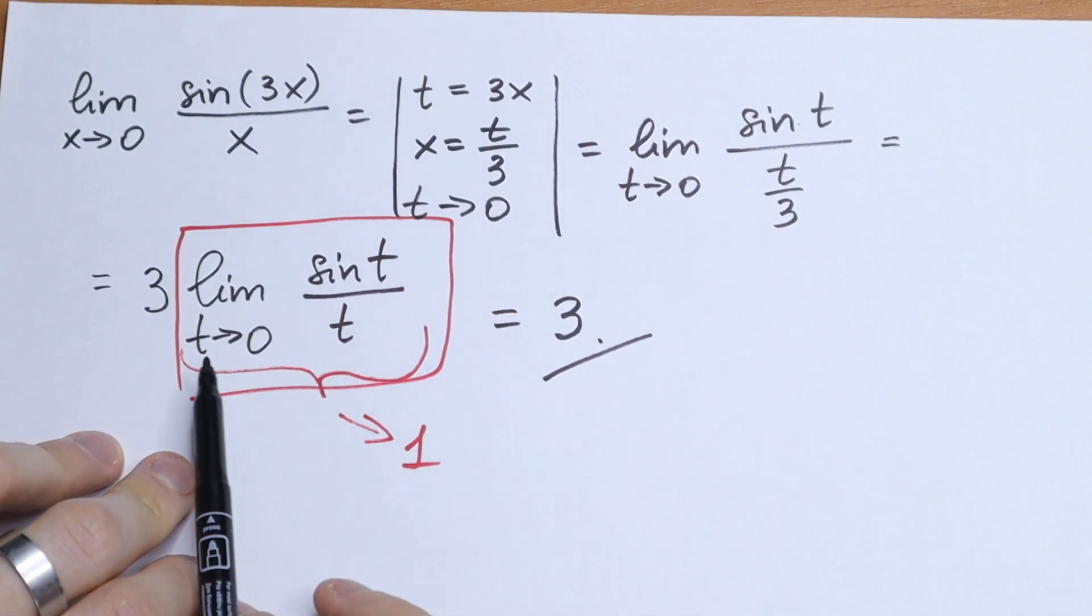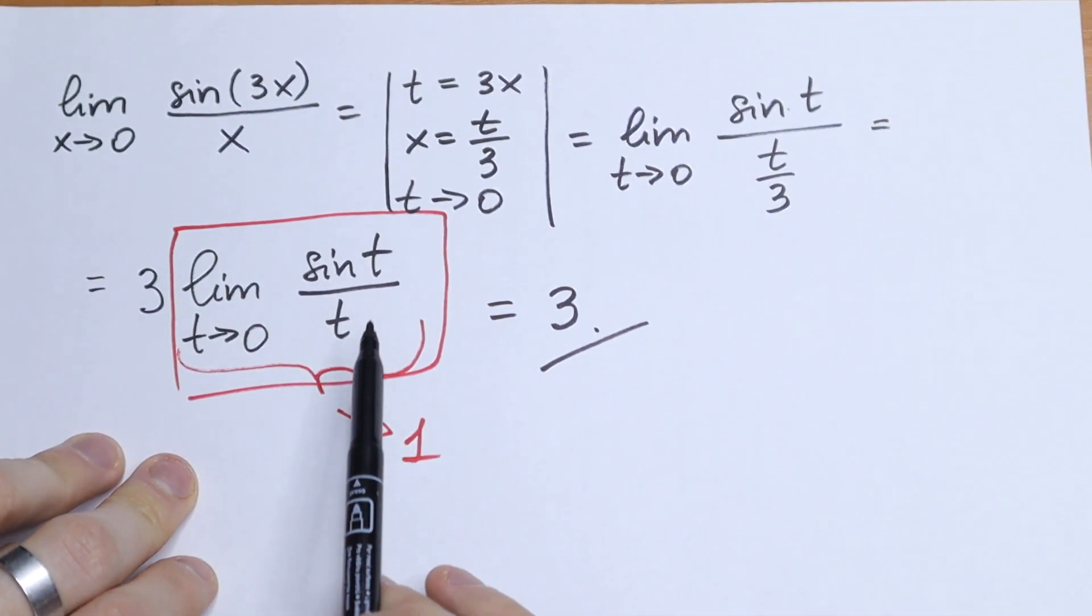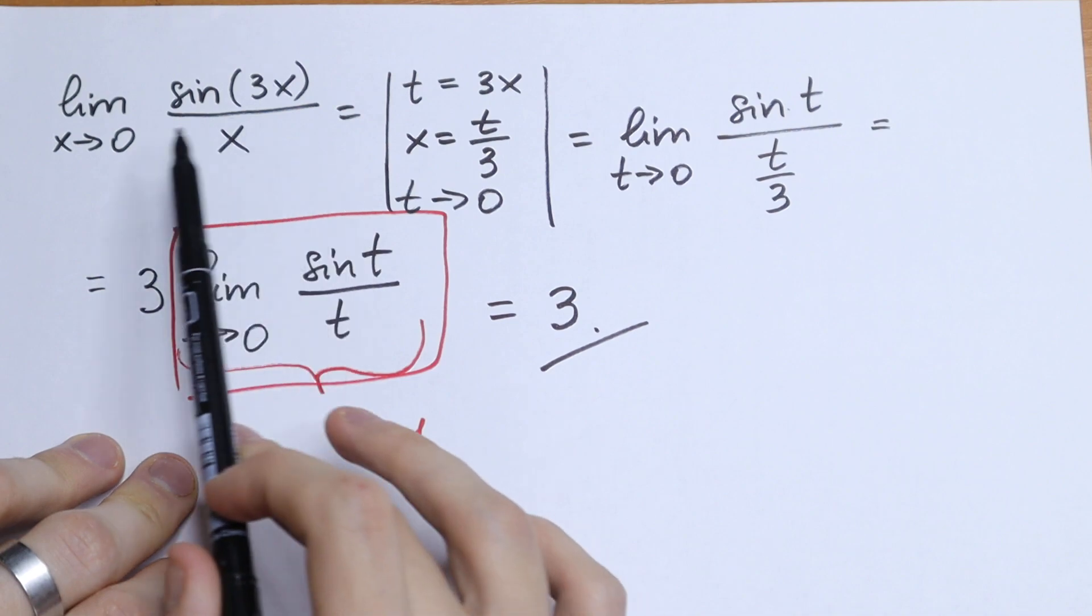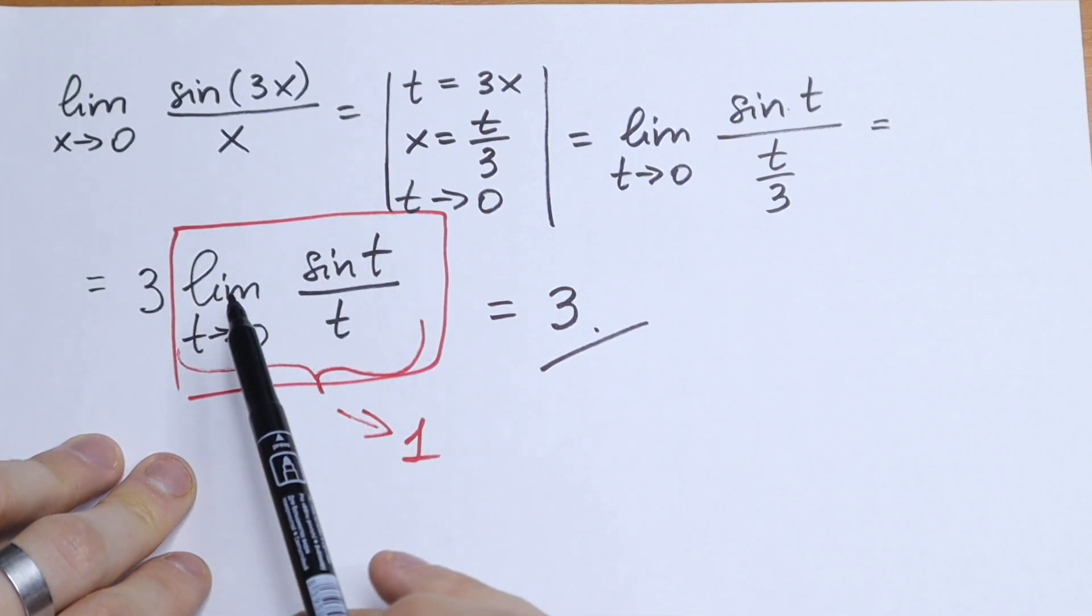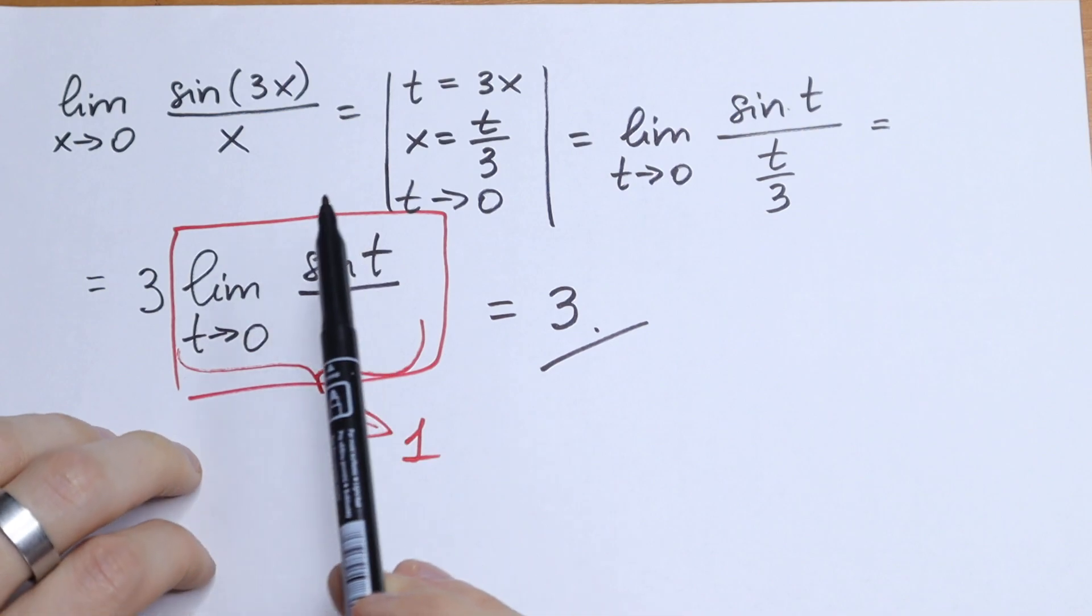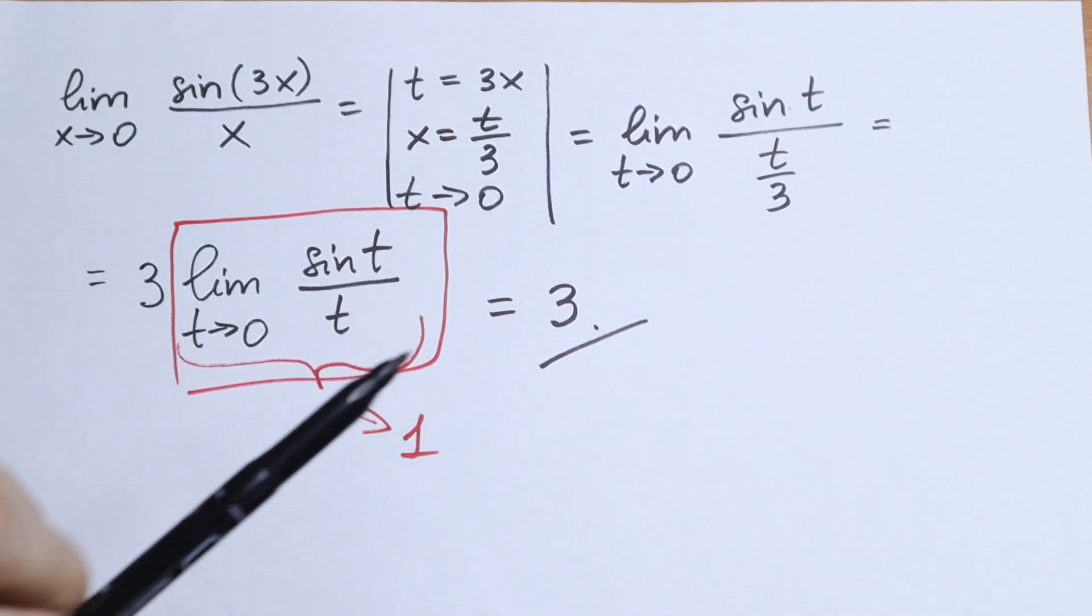Using a substitution right here, we need to know about this limit. But of course we know about the classic case with x, but right here we have t, so it doesn't matter. So our answer is 3.